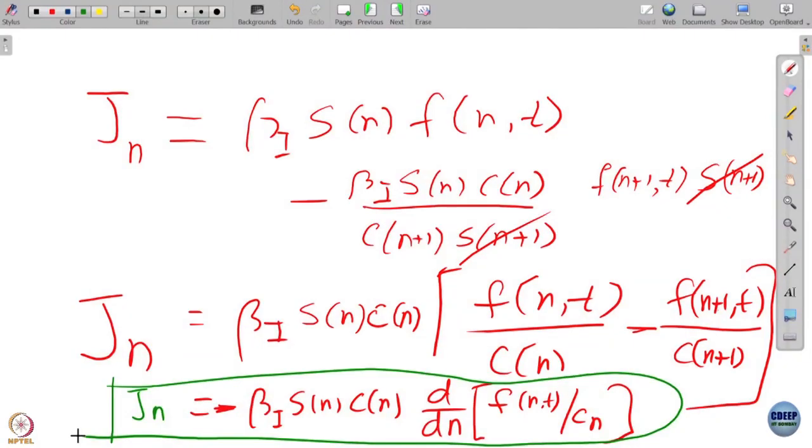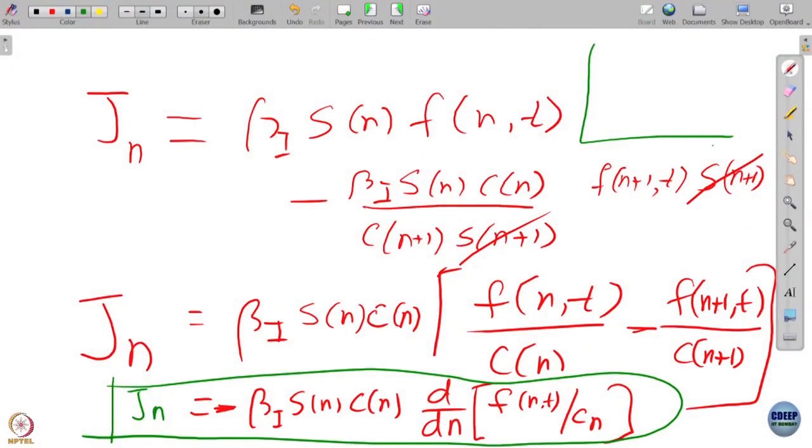Now we are going to get somewhere. We have derived this beautiful equation: J_n is minus beta i S_n C_n by F_n. Now, this is a very interesting thing to look into. I am using the corner because I need to talk of this equation quite a bit now.